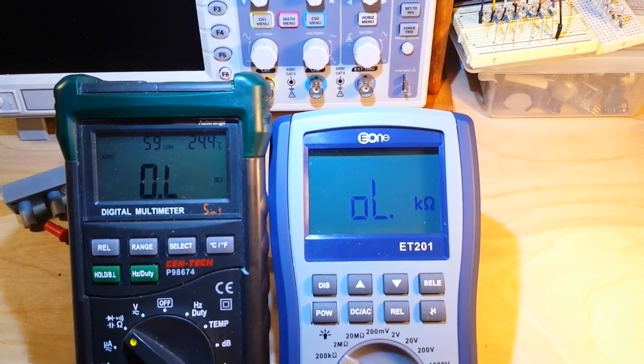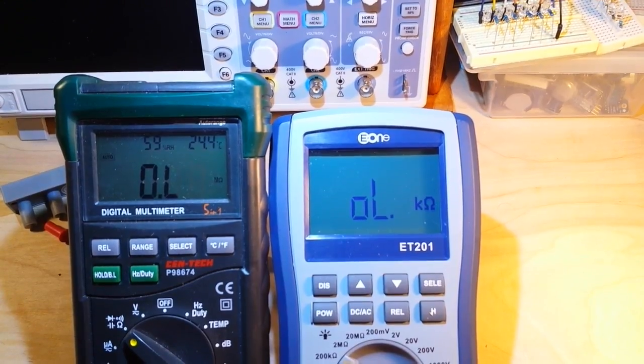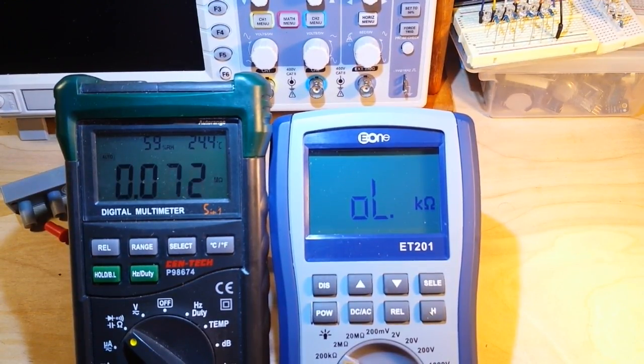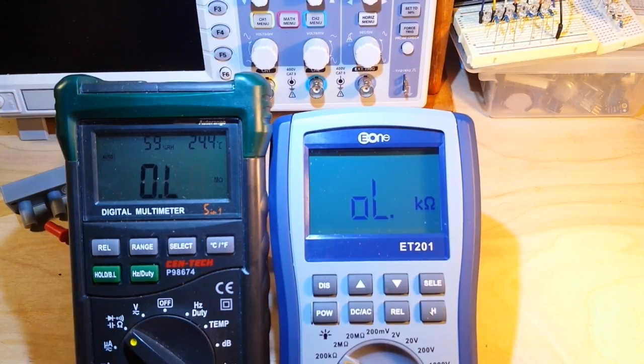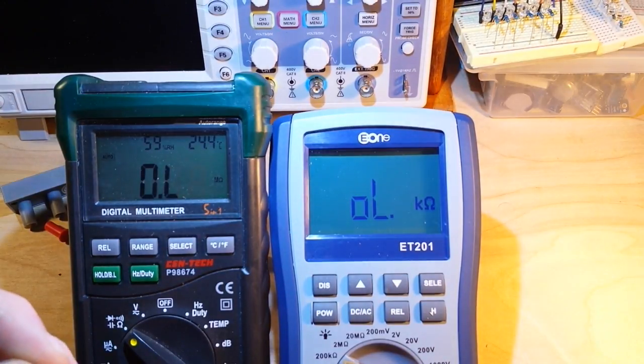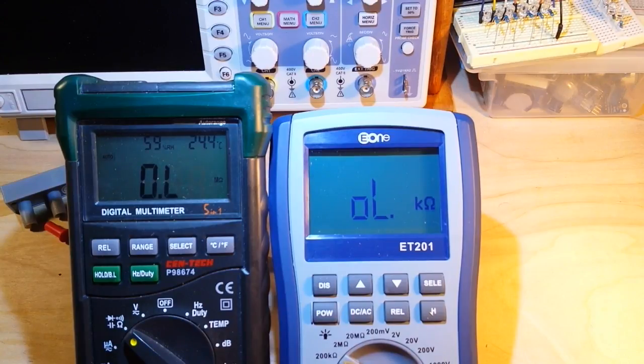Alright. Next up, we are going to do resistance. I've got a 100K resistor here. Let's check it with the Centech 98.9K. And then let's check it with the ET201. 99.1K. So it's a little bit off, a little low. But definitely doable.